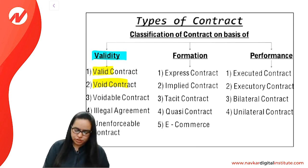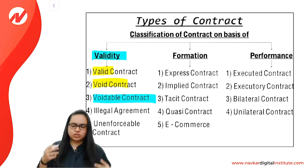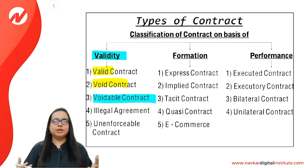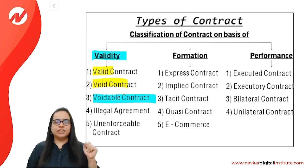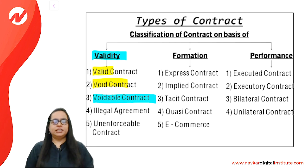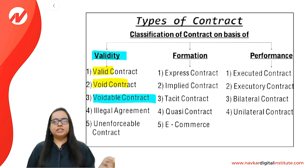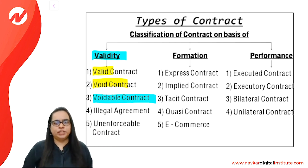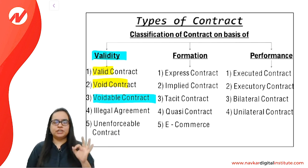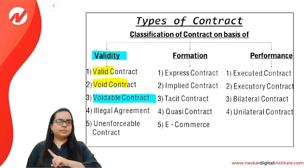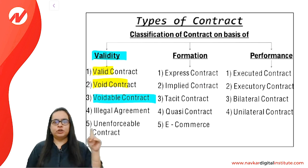The third important type, which students often forget, is a voidable contract. A voidable contract is enforceable at the option of one or more parties, but not at the option of others.